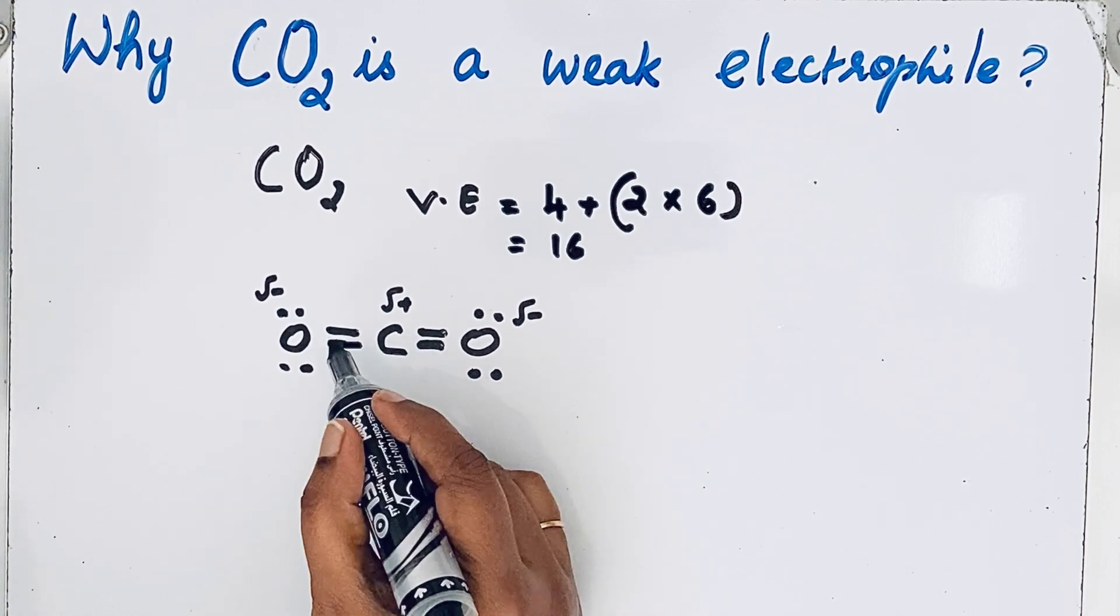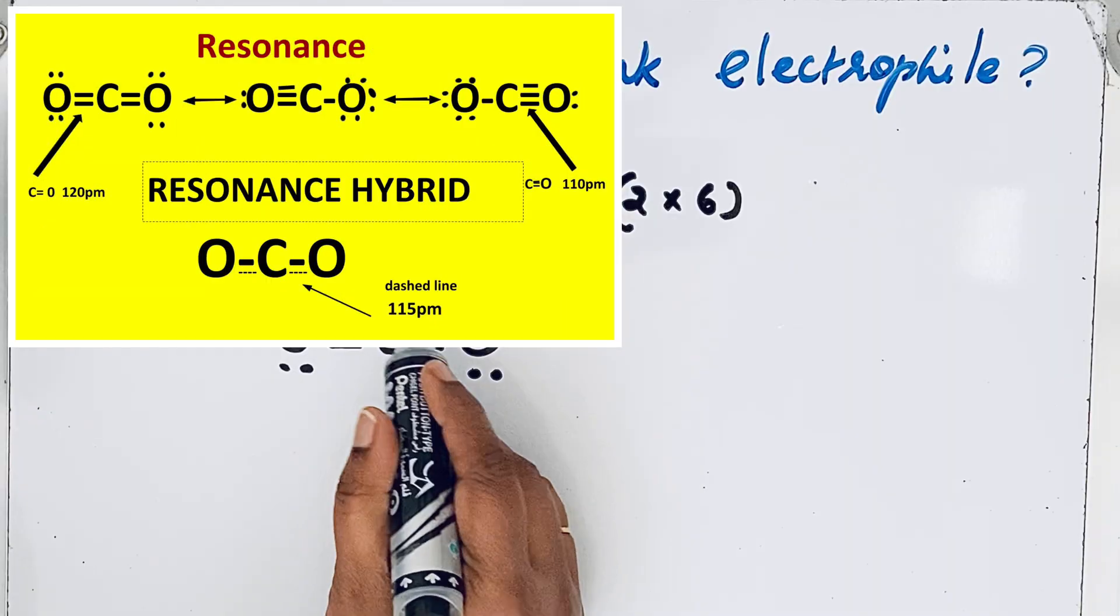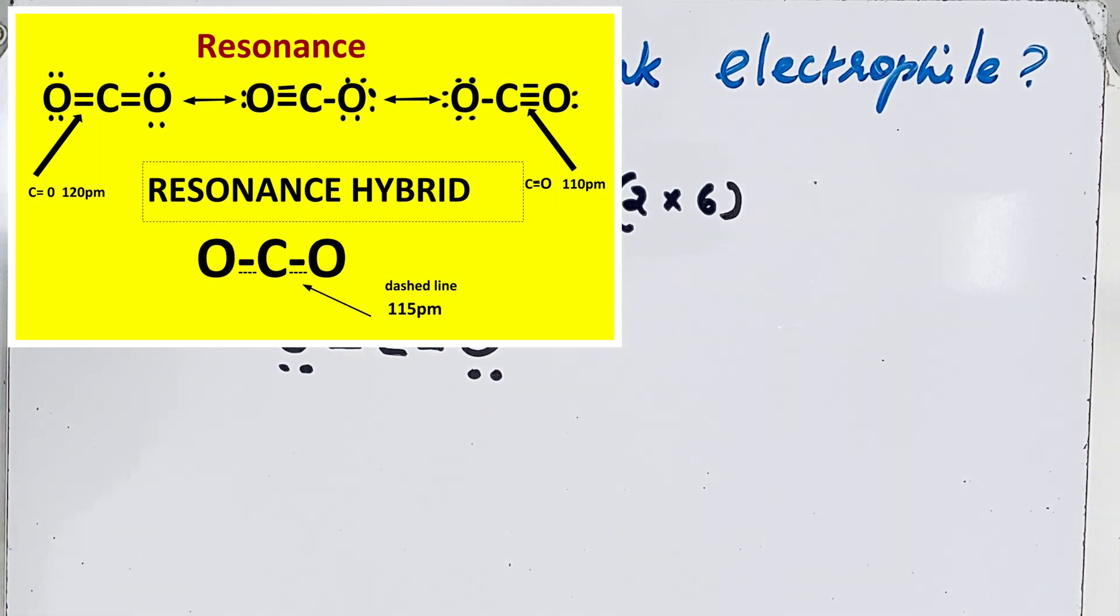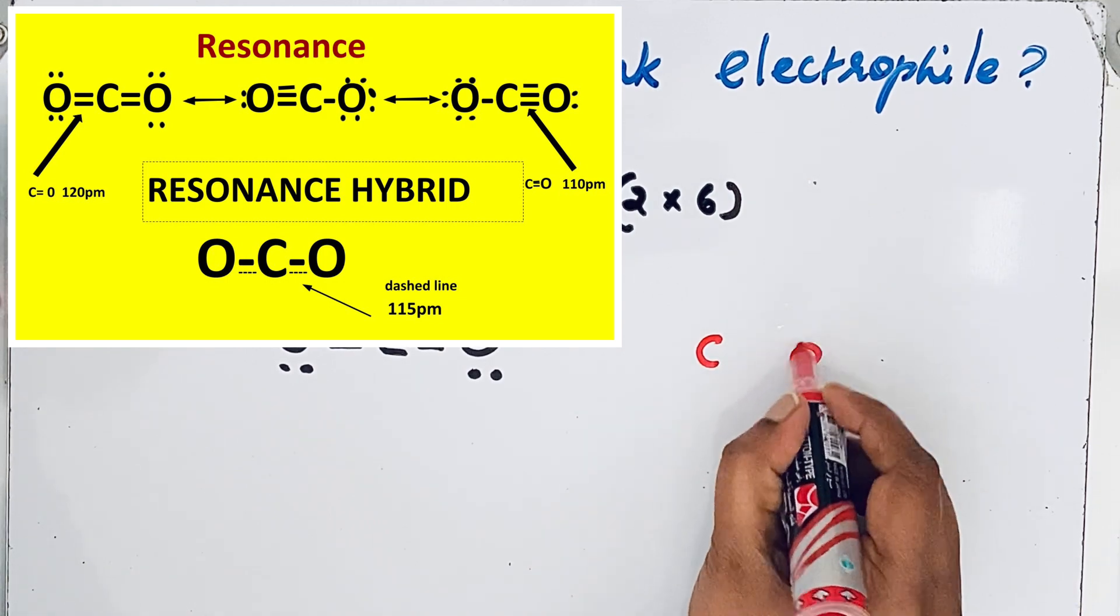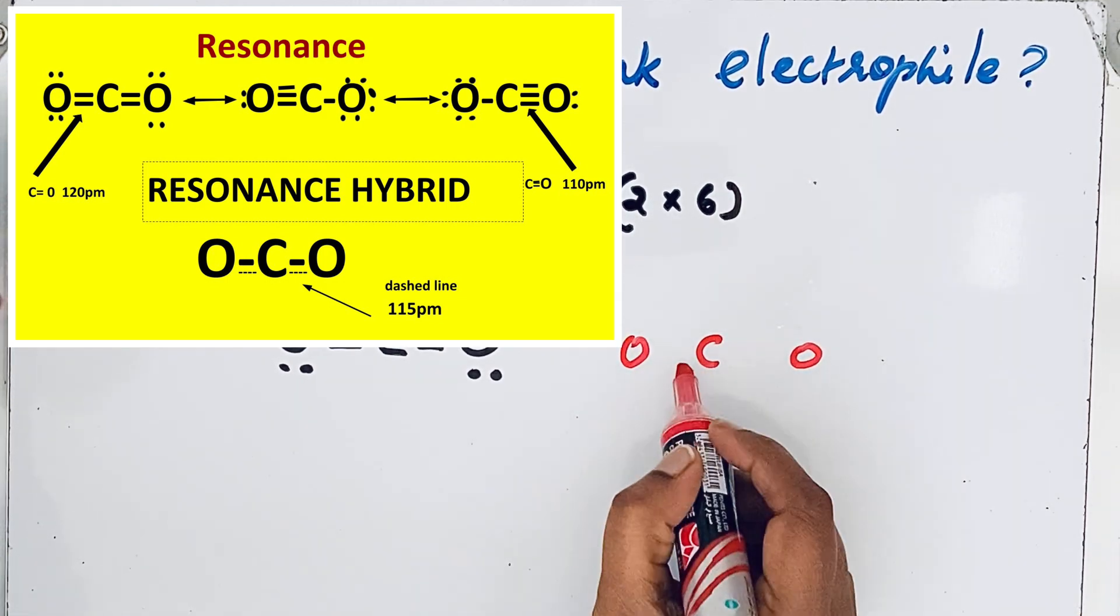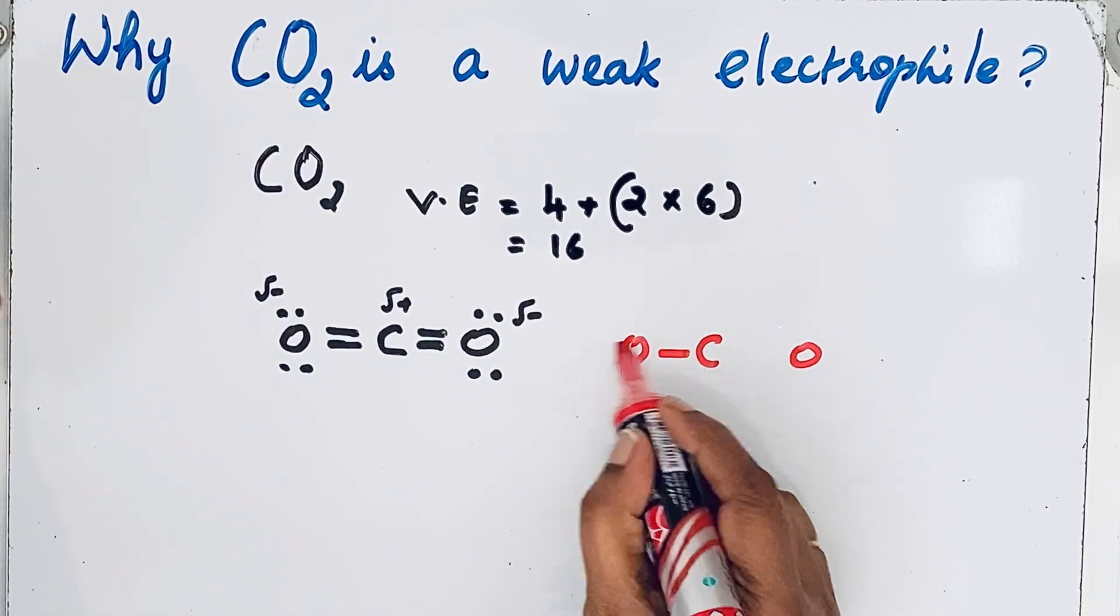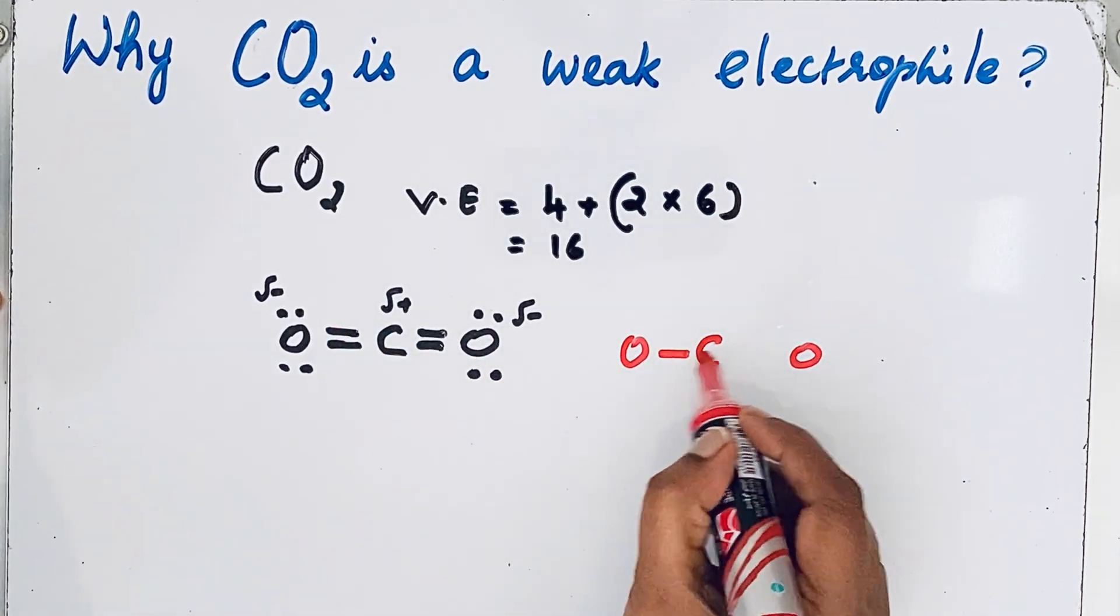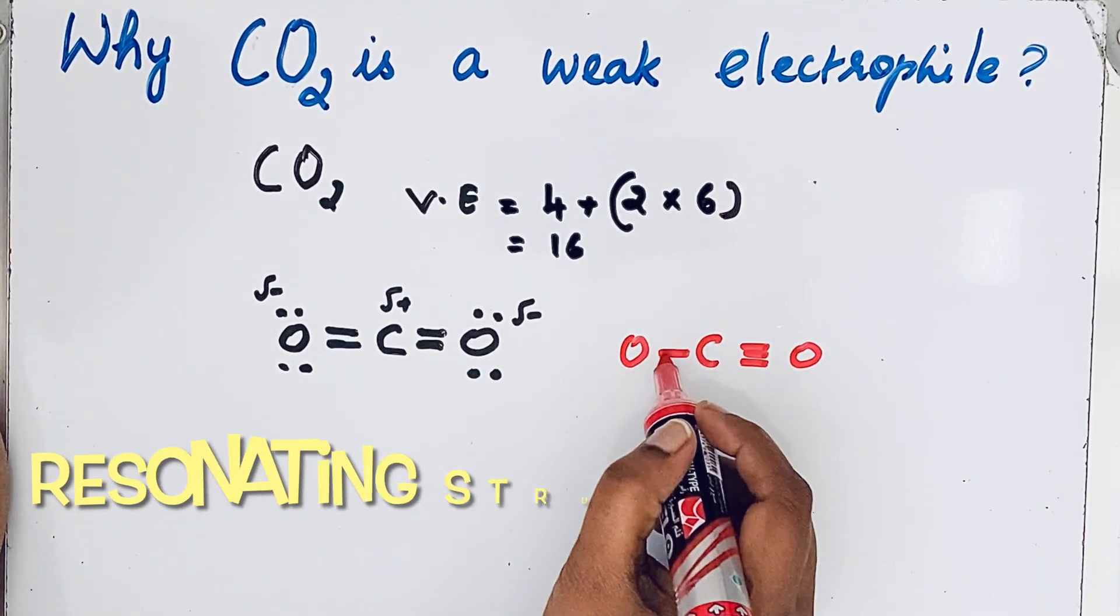This carbon dioxide can also involve in resonance. That means this double bond breaks and then forms a triple bond here. Let me show: carbon, then oxygen, oxygen. So this double bond breaks and forms the triple bond here.